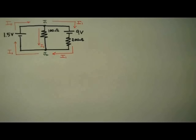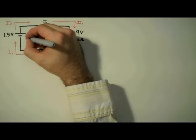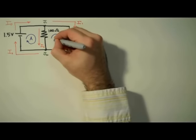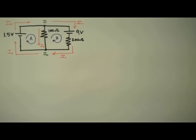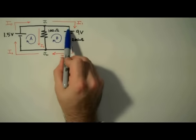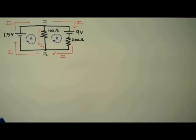Note that the directions of these currents at this point are arbitrary. We'll find out if we chose the right directions after we complete the problem. Next, we label our loops. I'll label this loop A and this loop B. Just like the currents, the direction of your loops is arbitrary. You can label this outer perimeter loop C if you'd like — I anticipate we won't need it.